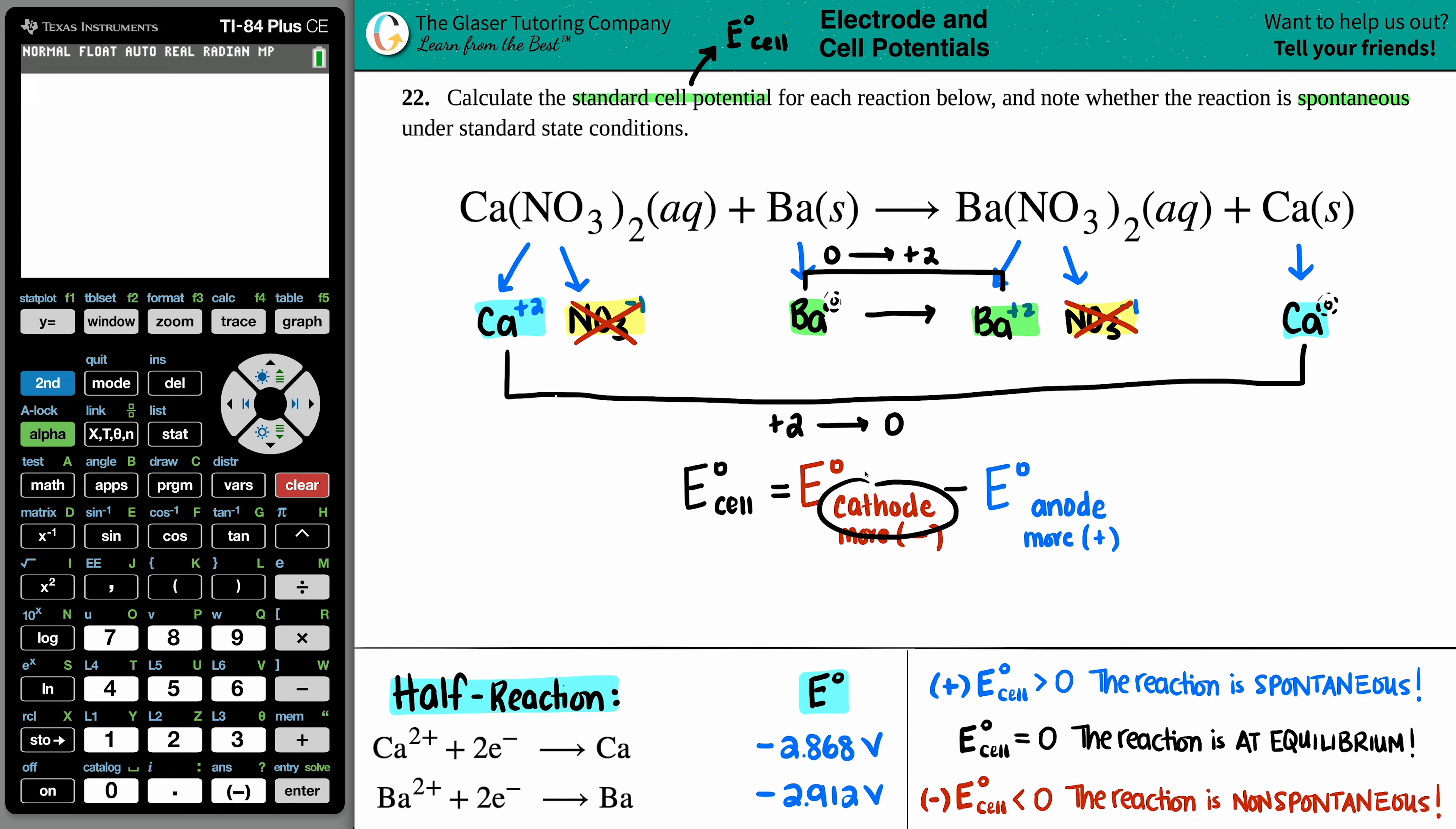Remember, reduction happens at the cathode. And since you're gaining electrons, you're always becoming more negative. Oxidation happens at the anode. You're losing electrons, and that's why you become positive. So between these two, one has to be the cathode and one has to be the anode.